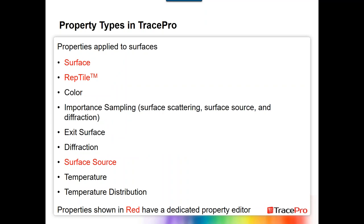In addition to properties applied to objects, we also have properties applied to surfaces: surface property, reptile, color, importance sampling for surface scattering, surface source, diffraction, exit surfaces diffraction, the surface source property, temperature, and temperature distribution. Again, the ones highlighted in red have dedicated property editors, and those are the ones we'll focus on.